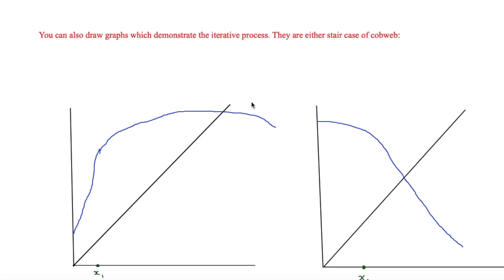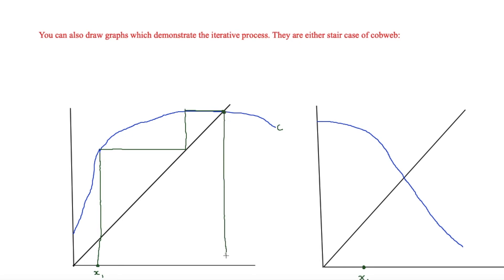The next topic relating to iterative processes is the graphs — either staircase or cobweb diagrams. For a staircase graph, draw the curve C and the line y = x. Then draw a vertical line up to the curve, across to the line y = x, then back to the curve, and repeat. This staircase pattern converges to the intersection point, representing each successive iteration x₁, x₂, and so on.